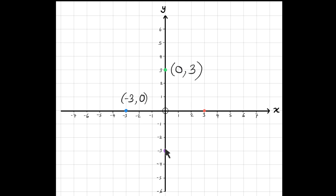And now the purple one. Along the corridor, I go to 0. And then down the stairs, I go to minus 3. So along the corridor is 0, and then down the stairs to minus 3. Therefore, the y-coordinate will be minus 3.